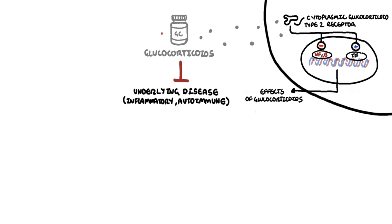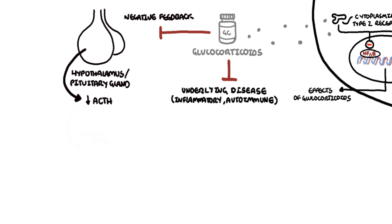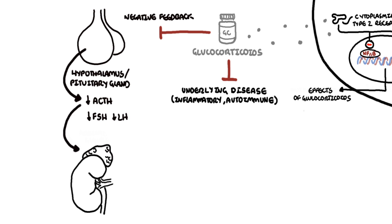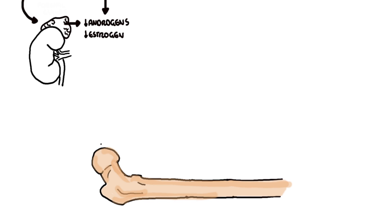Glucocorticoid use causes a negative feedback effect on the hypothalamus and the pituitary gland. Elevated glucocorticoid levels will reduce secretion of ACTH (adrenocorticotropic hormone), and also reduce the secretion and production of follicle-stimulating hormone (FSH) and luteinizing hormone (LH). Reduction in ACTH results in reduced endogenous steroid hormone production from the adrenal glands, including cortisol and androgens. Low FSH and LH reduces production of androgens and estrogens from the gonads, and low androgens and estrogens increases the risk of osteoporosis.